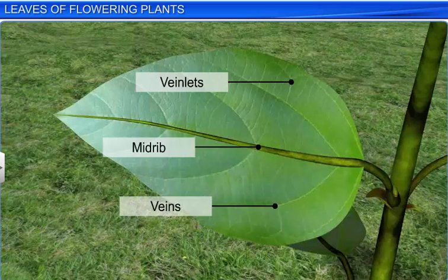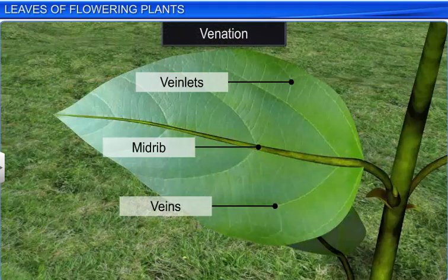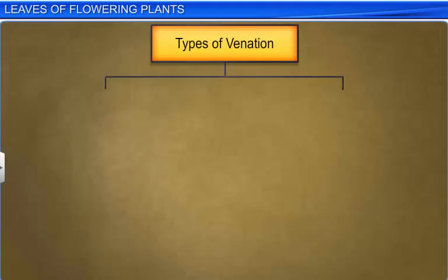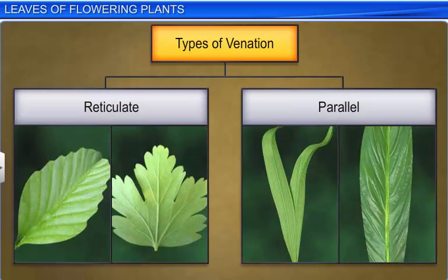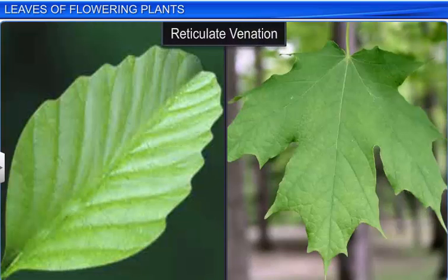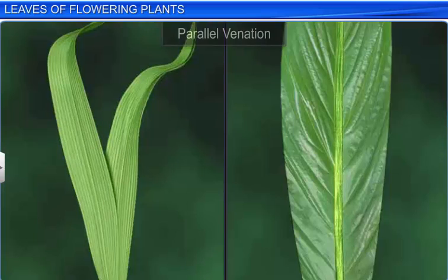The arrangement of veins and veinlets in a leaf blade, or lamina, is called venation. Venation is of two types: reticulate and parallel. In reticulate venation, the veins within the lamina form a network, a characteristic that is common to dicotyledonous plants. In parallel venation, the veins run parallel to each other, a characteristic typical to monocotyledonous plants.